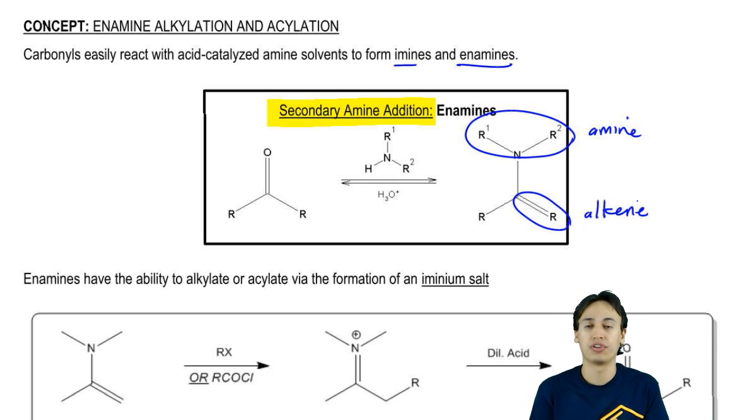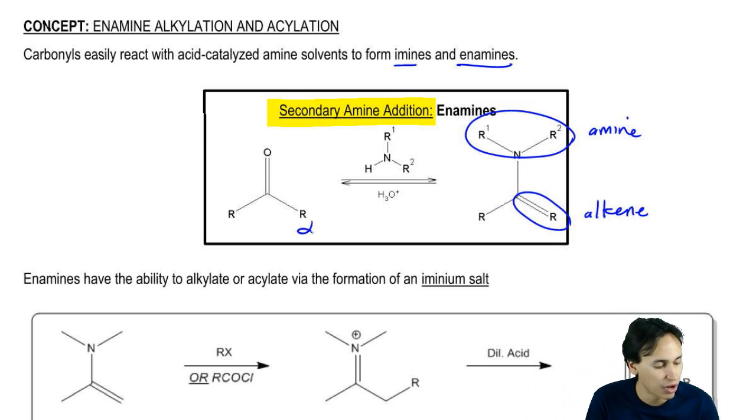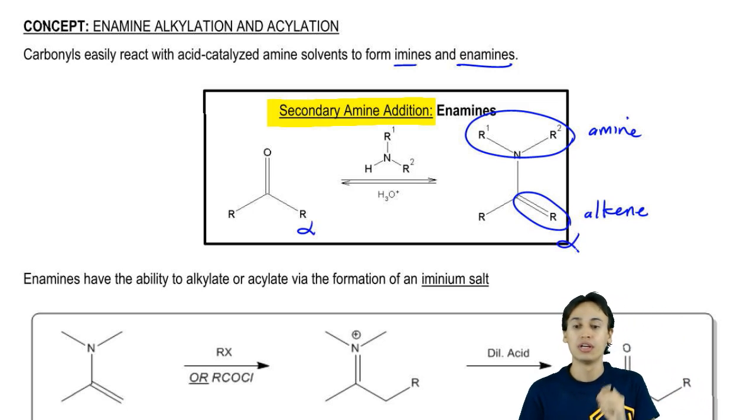Enamines are really important for us for one reason alone, which is that enamines have a nucleophilic alpha carbon. If you think about it, this was the alpha carbon to begin with. This is still the alpha carbon. Enamines are able to use that alpha carbon to do nucleophilic attacks.